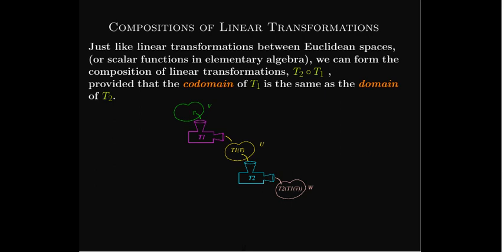The only stipulation is that the codomain of T1 should be the same as the domain of T2, because we're chaining these together. When we say T2 composed with T1, we take a vector from the domain of T1, put it into T1, and get an output vector T1(v). Since that output must be in the domain of T2, we can then find T2(T1(v)) and get some output in the codomain of T2. For this to be defined, the output from T1 has to be a valid input for T2.